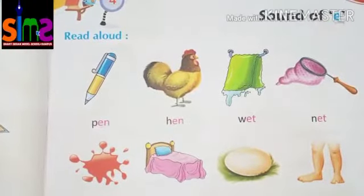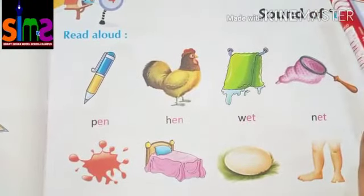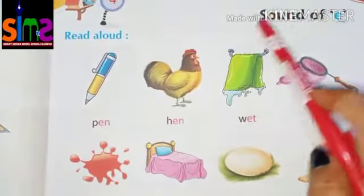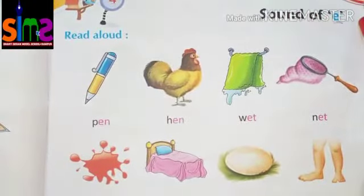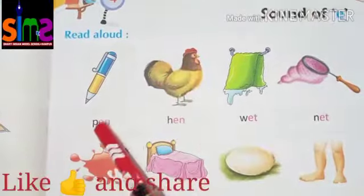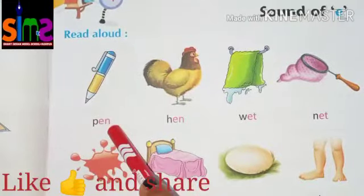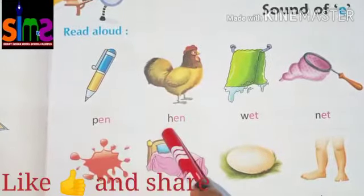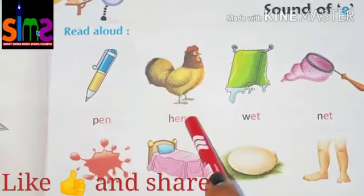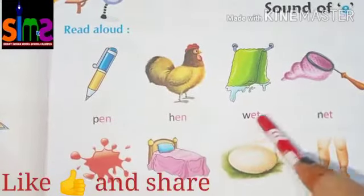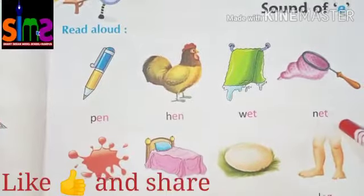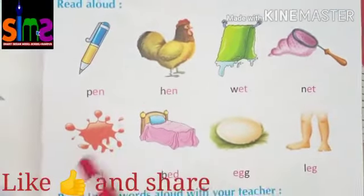So kids, we will read it once again. Words of vowel sound of E: P-E-N, pen. H-E-N, hen. W-E-T, wet. N-E-T, net.